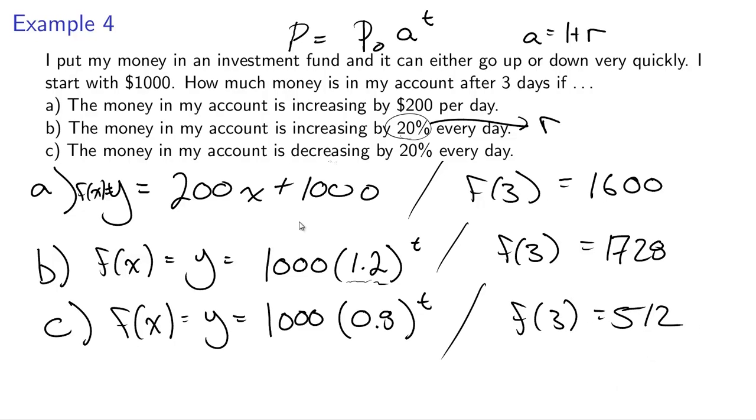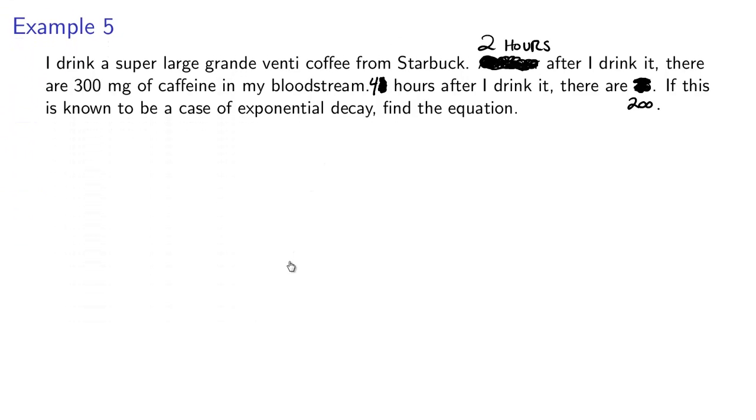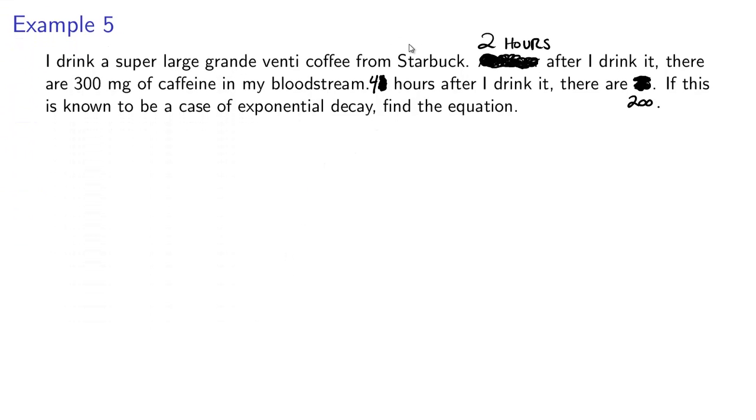So notice that in this example, they gave us basically the exact numbers we needed. They gave us our P0 exactly, and they also basically gave us a. They gave us this r, which we could get a with really easily. What if they make us do a little bit more work? So let's look at this example. And in this example, they don't give us P0 and a. What they give us is two points on our line.